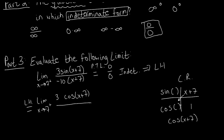For the derivative of the denominator, we have negative 10 times (x + 7). Distributing gives negative 10x minus 70, and the derivative of that is simply negative 10. So by L'Hopital's rule, the limit of the original quotient equals the limit of the new quotient with these derivatives — the limit of the derivative of the numerator over the derivative of the denominator.